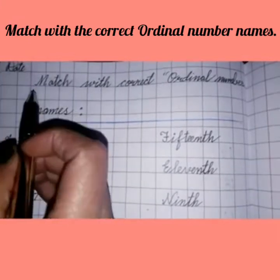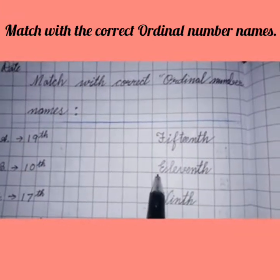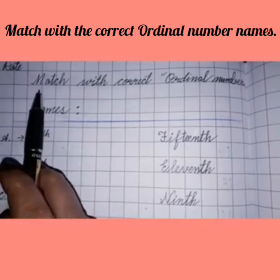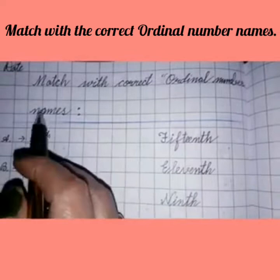Children, firstly you will write down date here in this corner. And then you will write down the heading of today's topic. And today's topic is match with correct ordinal number names. So write this heading in your notebook.